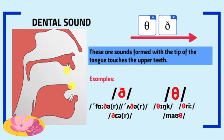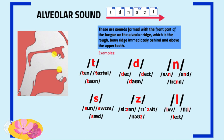Dental sounds are sounds formed with the tip of the tongue touching the upper teeth. The letters that give us this sound are T and D — wherever T and D come, our tongue touches the upper teeth when we pronounce them. Alveolar sounds are sounds formed with the front part of the tongue on the alveolar ridge, which is the rough bony ridge immediately behind and above the upper teeth. The letters for this sound are T, D, N, S, Z, and L.